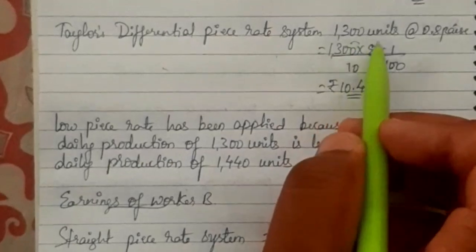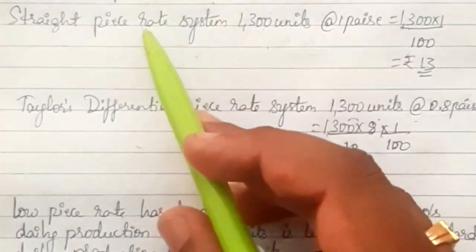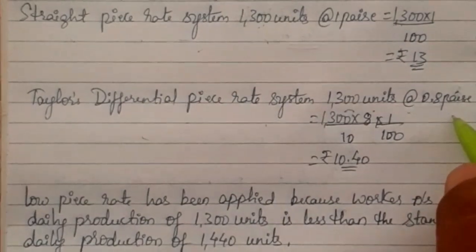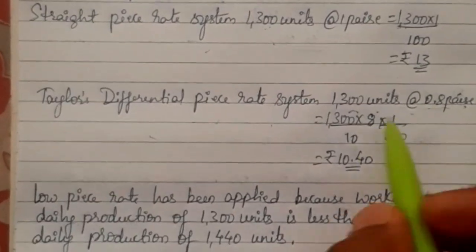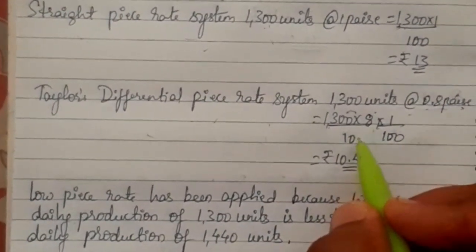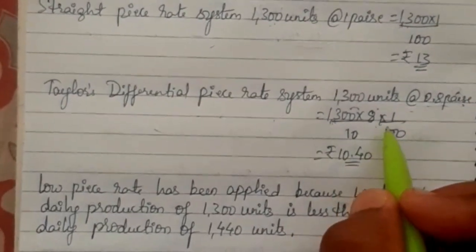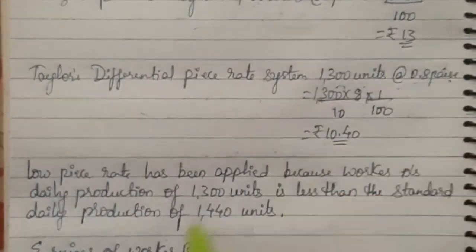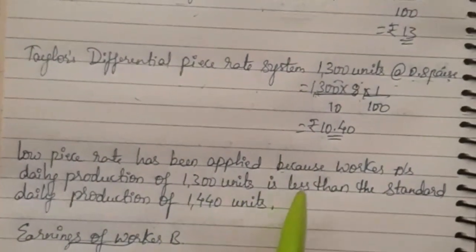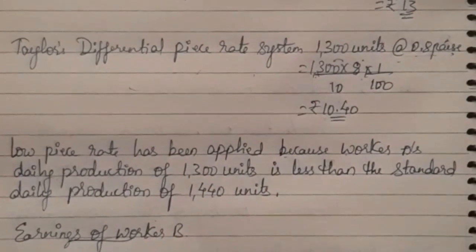Under Taylor's differential piece rate system, worker A is below standard so the low piece rate of 0.8 paise applies. Earnings = 1300 × 0.8 paise ÷ 100, which is 1300 × 8 ÷ 10 ÷ 100, giving rupees 10.40. Low piece rate is applied because worker A's daily production of 1300 units is less than the standard daily production of 1440 units.